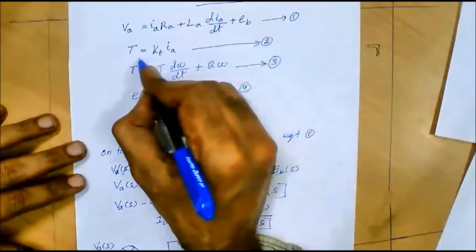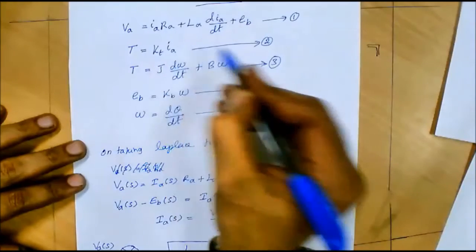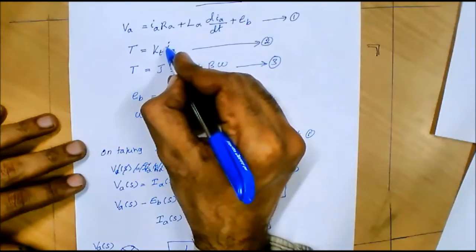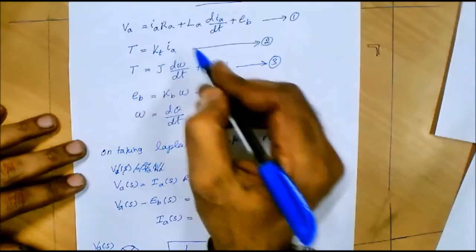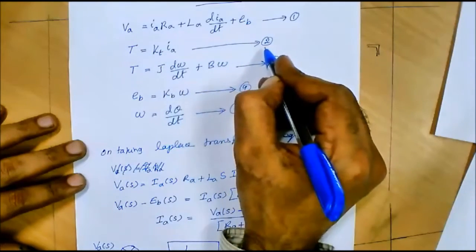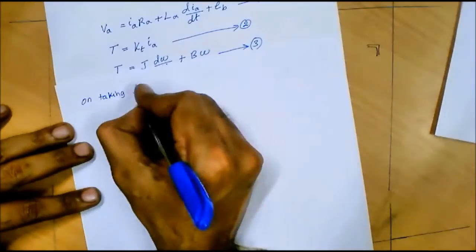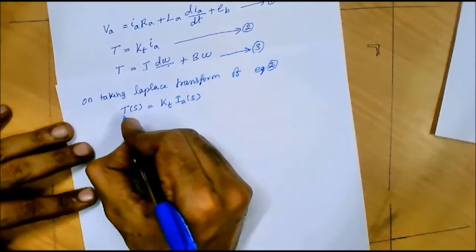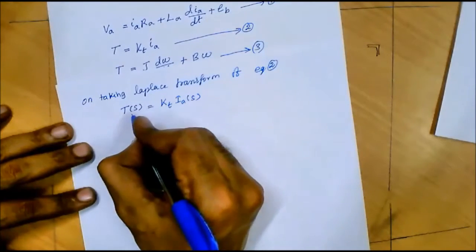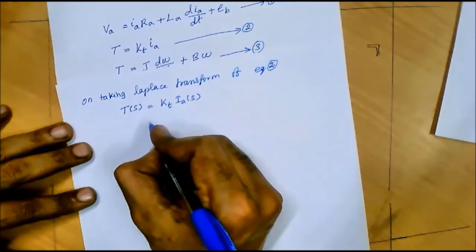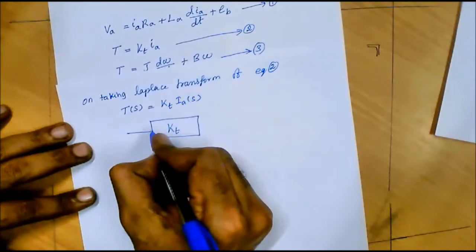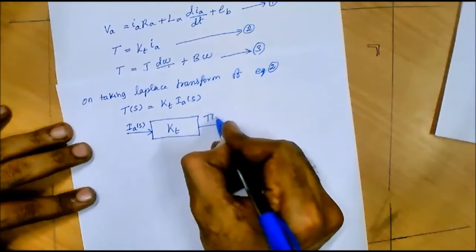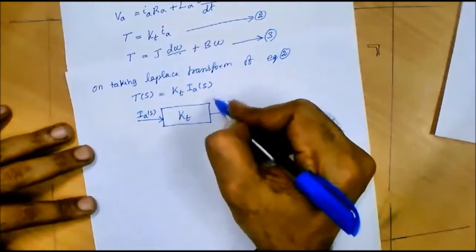Now let us consider the second differential equation: T = KT·IA. In the previous equation we took IA(S) as output, so here we take IA(S) as input and T as output. Taking the Laplace transform: T(S) = KT·IA(S). The block diagram has IA(S) as input, KT inside the block, and T(S) as output.